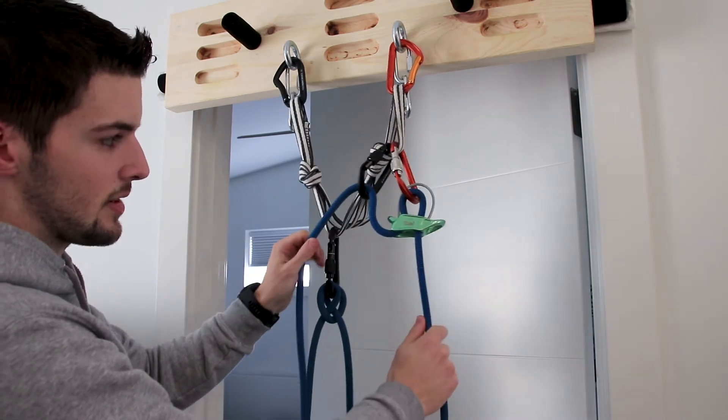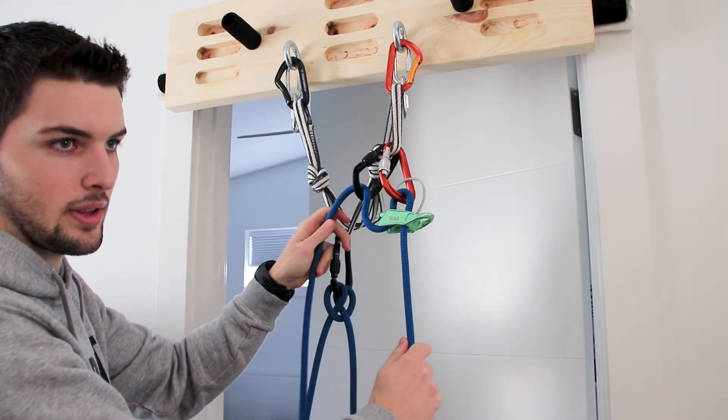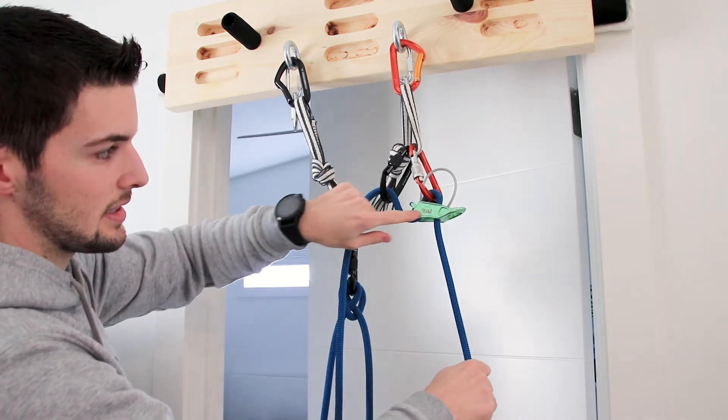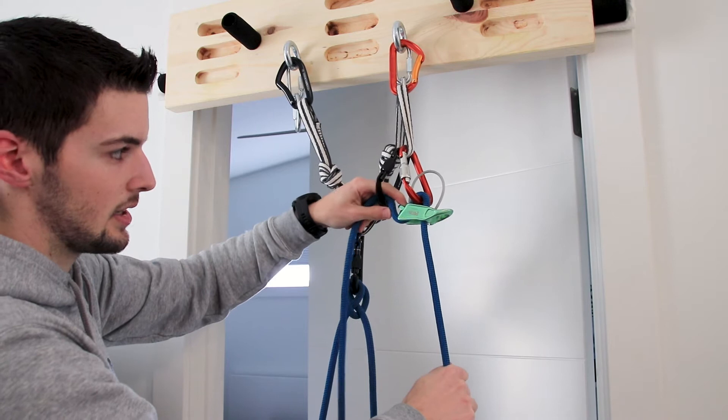We need the brake strand redirect in case our climber takes a fall early in the climb before they get to the first drop and end up falling past the anchor. This way it keeps the rope using the friction of the belay device and in the braking position.